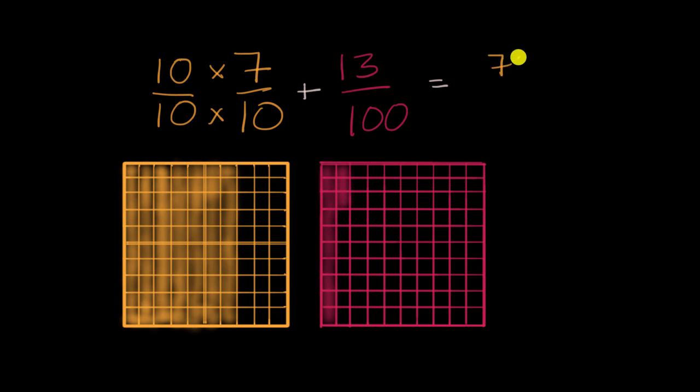So this is equal to 70 hundredths, which is this right over here, plus 13 hundredths. Well, now we're adding hundredths in both cases. If I have 70 of something, and I add to that 13 of the same somethings, in this case the something is hundredths, I'm going to have 83 of that thing.